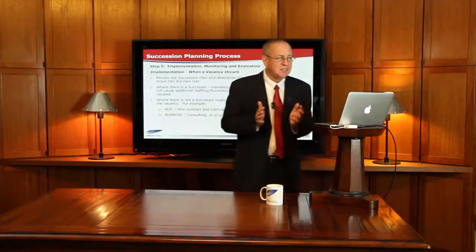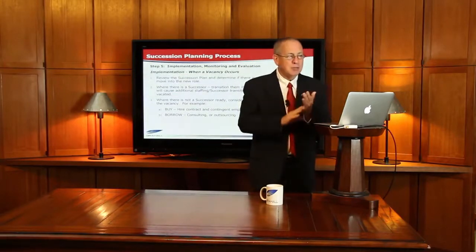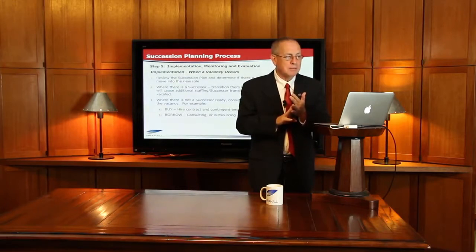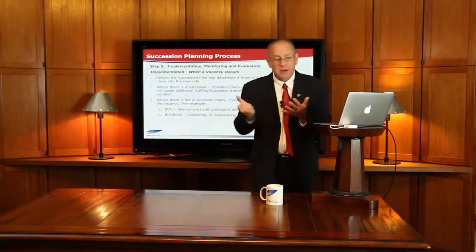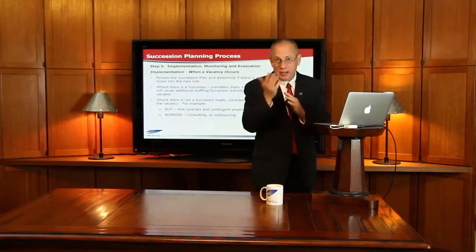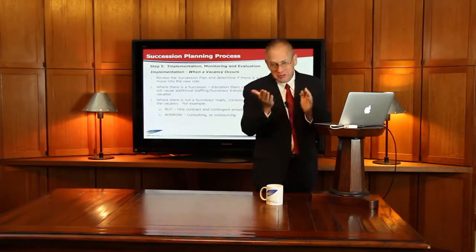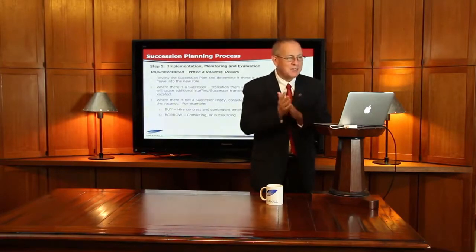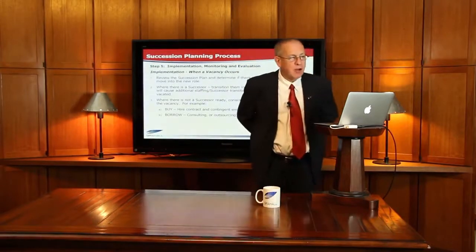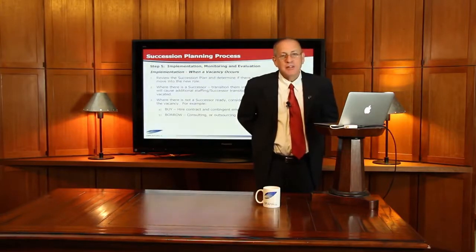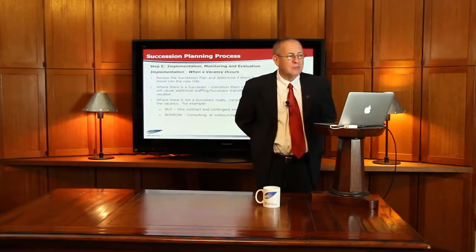Step five: we have a succession plan in place — we need to implement it, then monitor and evaluate it over time. When a vacancy occurs for a job in the succession plan, we pull it out, review the plan, determine and confirm who the successor is and their level of readiness. Where there is a successor, transfer them into the new planned role. The third aspect of implementation, monitoring, and evaluation is recognizing the reality of what happens if we don't have a successor for that job right now. What are some of the options?